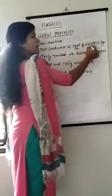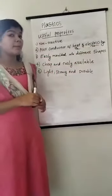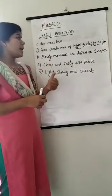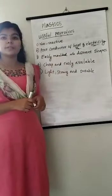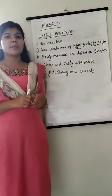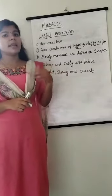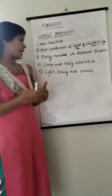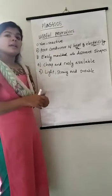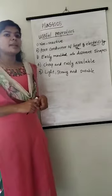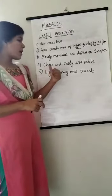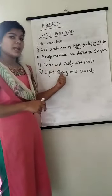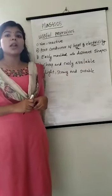Plastics are also poor conductors of electricity, so they are used to make switches, plugs, etc. They are easily molded into different shapes — when a plastic bottle comes close to heat, it starts melting, so it can be easily molded and that is why they are recyclable. Plastics are also cheap — their price is very low compared to metals, so they are readily available in the market. They are also lightweight, strong, not breakable, and durable, that is long-lasting.